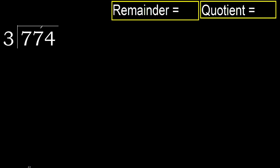774 divided by 3. 7 is not less, therefore start with 7. 3 multiplied by which number is nearest to 7 but not greater? 3 multiplied by 3 is 9.